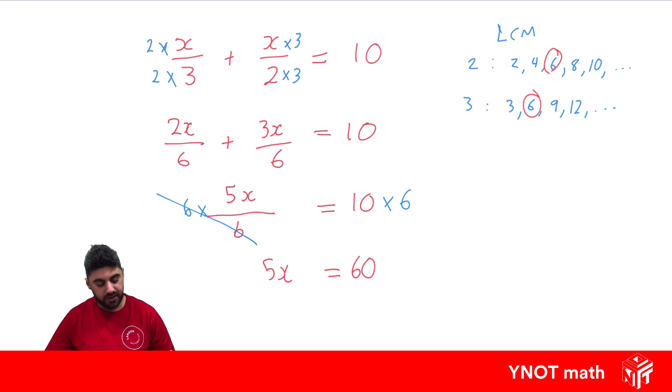Now we just need to get rid of that 5 because we need to get x by itself. The opposite of timesing by 5 is dividing by 5. Just remember 5x means 5 times x. 5 divided by 5 is 1, equals under equals. We're just left with the x. And 60 divided by 5 is 12.